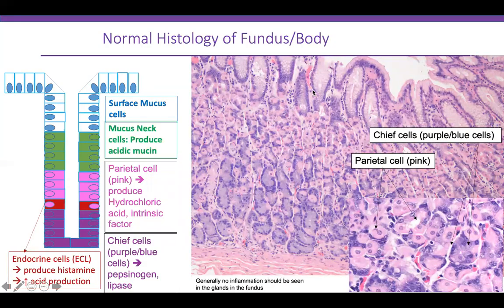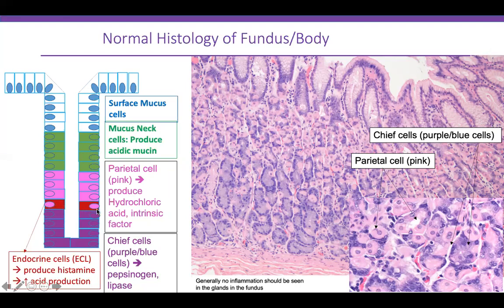This is the normal histology of fundus or body epithelium showing oxyntic mucosa. The surface is lined by surface mucus cells, then you have mucus neck cells which produce acidic mucin, and then the pink parietal cells visible here. These pink cells produce hydrochloric acid and also intrinsic factor. Intrinsic factor binds vitamin B12 in the stomach, protecting it from degradation until it reaches the small bowel for absorption.